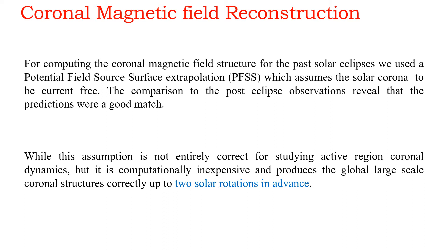Using the SFT-generated surface maps as a lower boundary condition, we employ a Potential Field Source Surface (PFSS) extrapolation, which assumes the solar corona to be current-free and generates the magnetic field structure in the global solar corona. After comparing these coronal structures to post-eclipse observations, we found that these extrapolations are a very good match. While the current-free assumption is not entirely correct for studying active region coronal dynamics, it is computationally inexpensive and produces the global large-scale coronal structure correctly up to two solar rotations in advance.